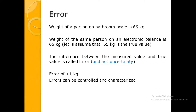Now let us quickly see what is error. The weight of a person on a bathroom scale is 66 kg. The weight of the same person on an electronic balance turns out to be 65 kg. Since the electronic balance is more accurate, 65 kg becomes the true value. The difference between the measured value of 66 and the true value of 65 is known as error — not uncertainty. This error is plus one kilogram.